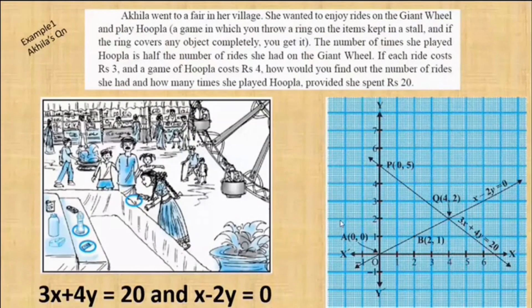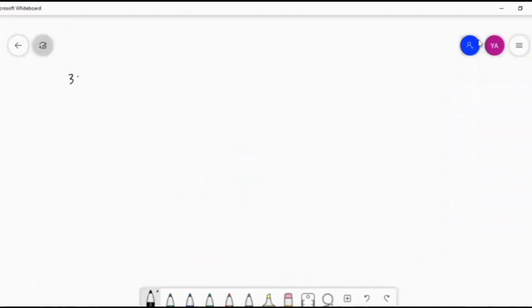We start with this problem — I think you know this problem, the Aquinas problem. If you get the equations, the question will be the same: how we can solve using algebra, not with the graph. So we just copy these equations to the whiteboard. Here the equations are 3x plus 4y is equal to 20, and second equation is x minus 2y is equal to 0.